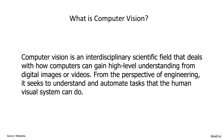A classic definition is that it is an interdisciplinary scientific field that deals with how computers can gain high-level understanding from digital images or video. Computer vision seeks to understand and automate tasks that the human visual system can do.